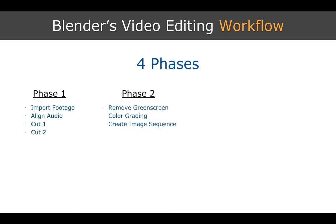Phase two is where we remove our green screen, maybe do a little color grading. And then in Blender, we create what's called an image sequence — basically a sequence of images, particularly images that have a transparent background. Since we've removed the background, we want to then overlay the subject on something else. An image sequence is actually very important to have that fine control over the placement of your subject.